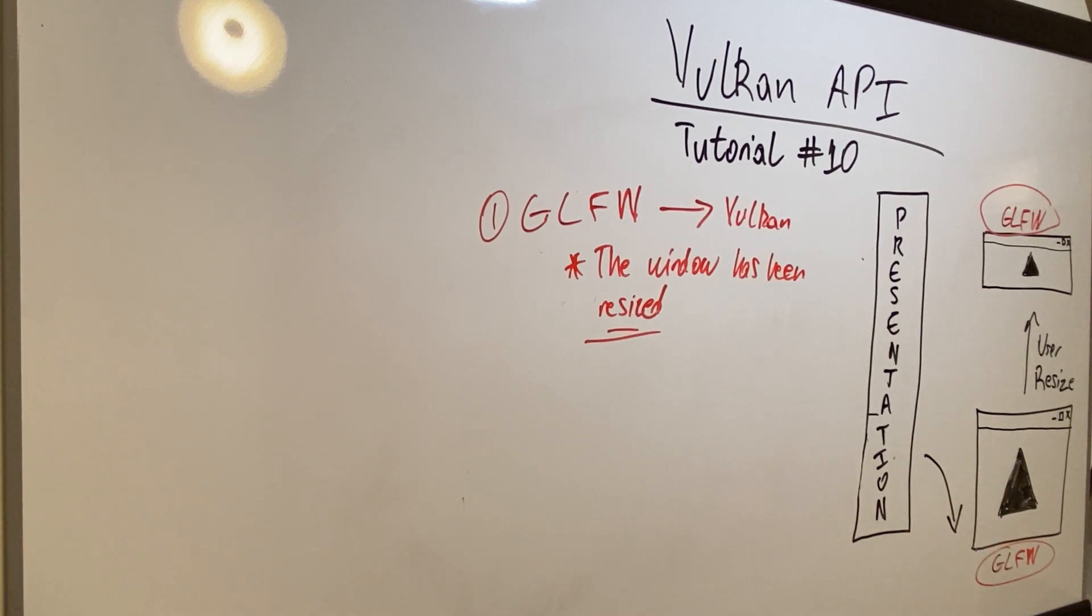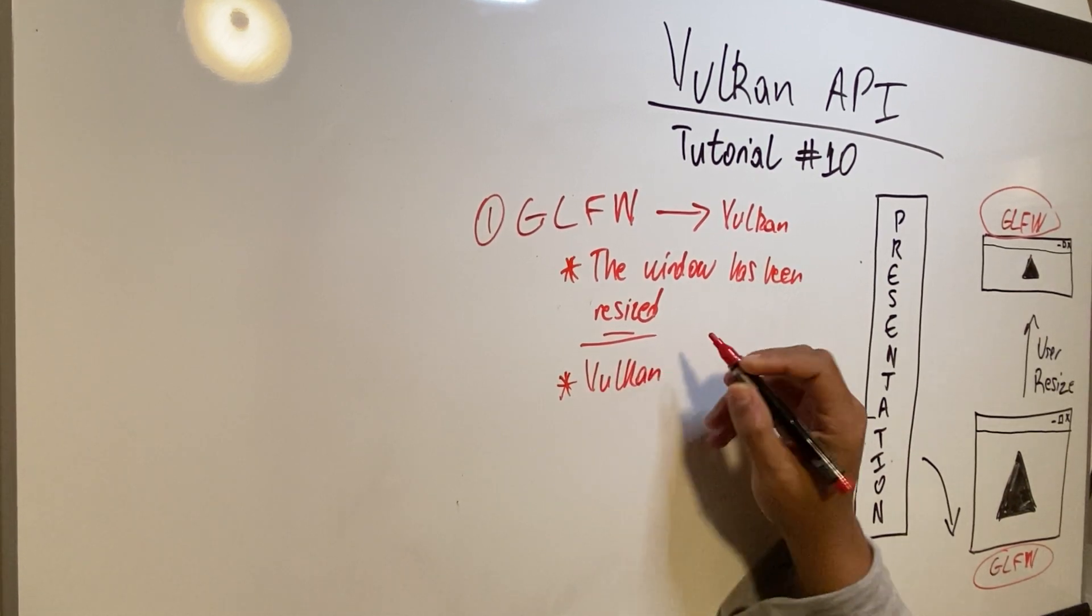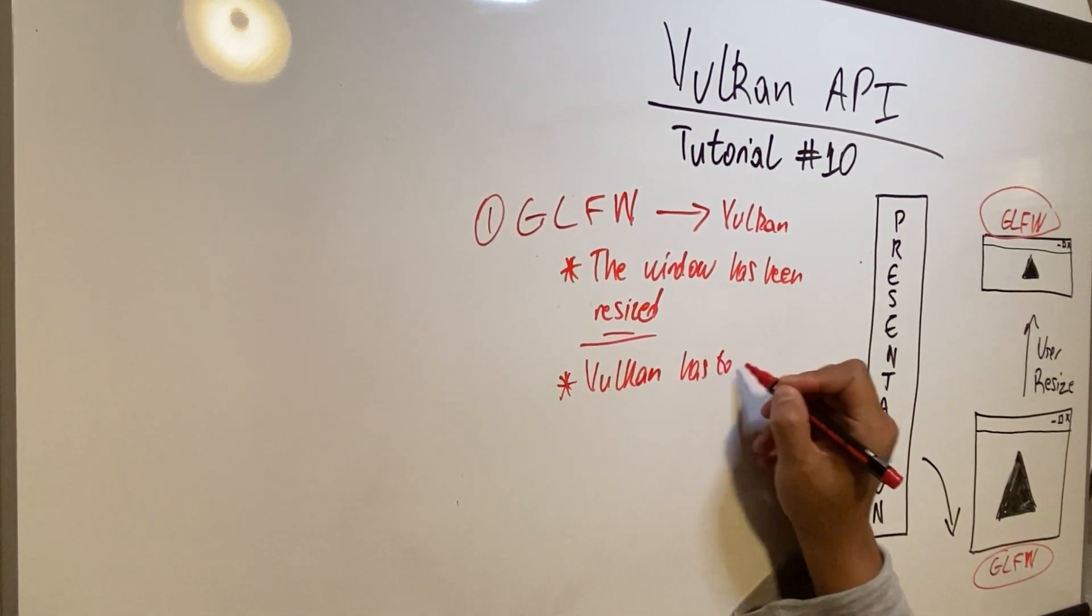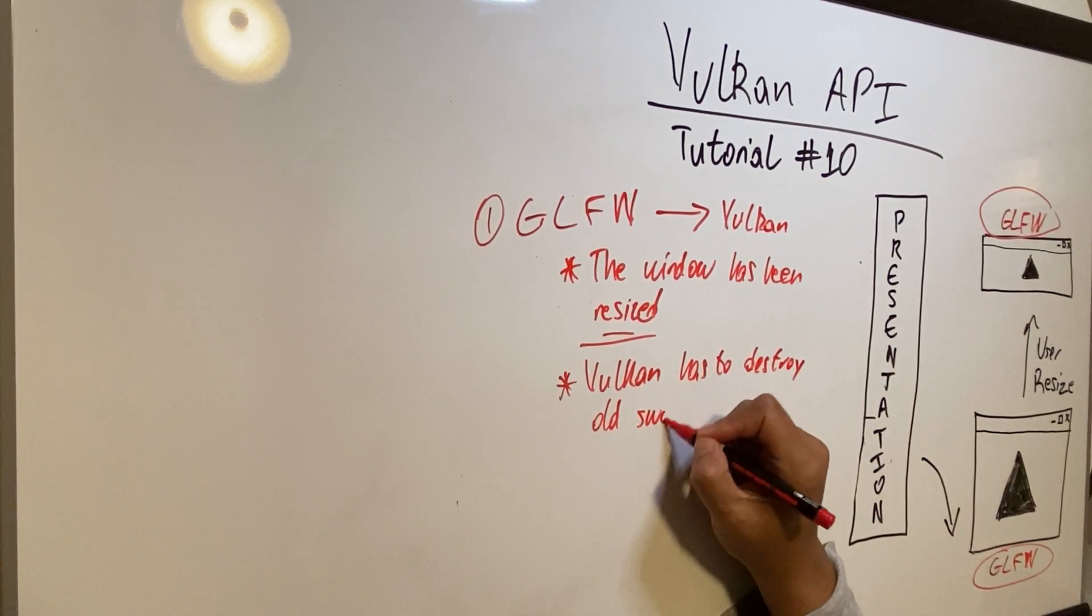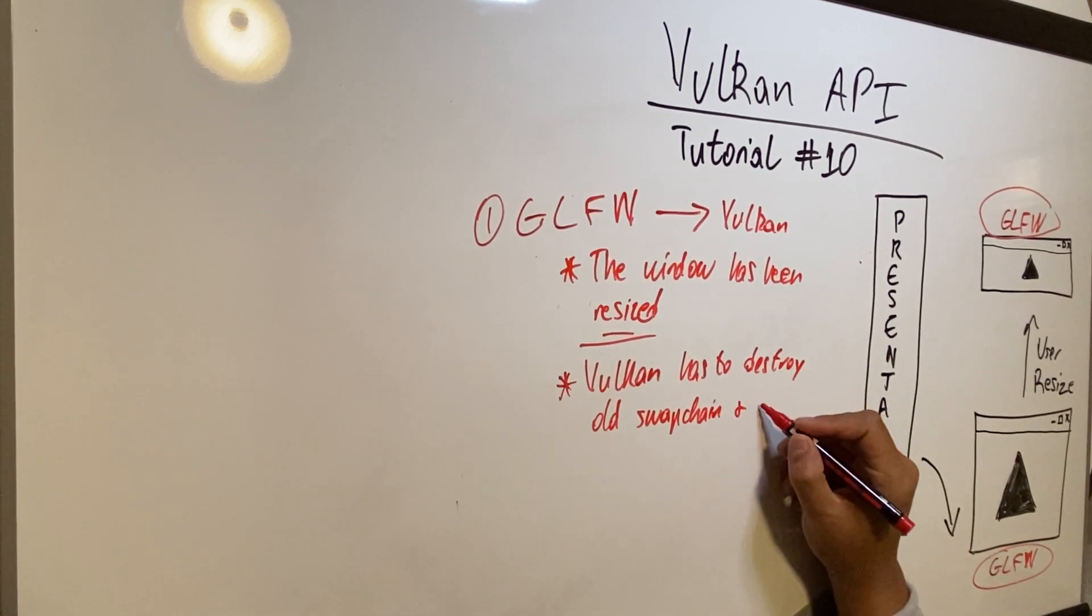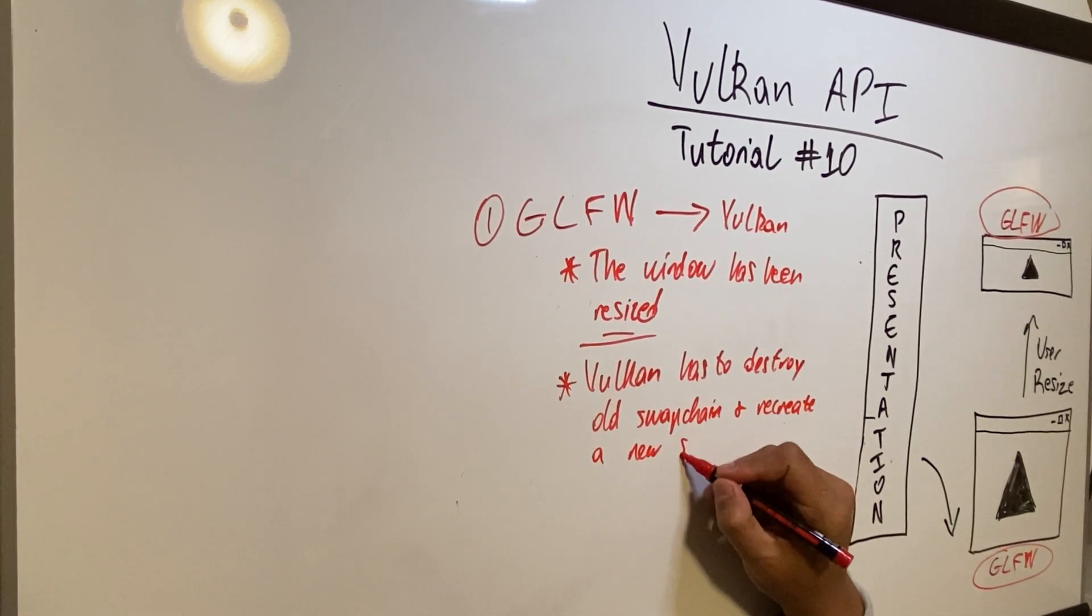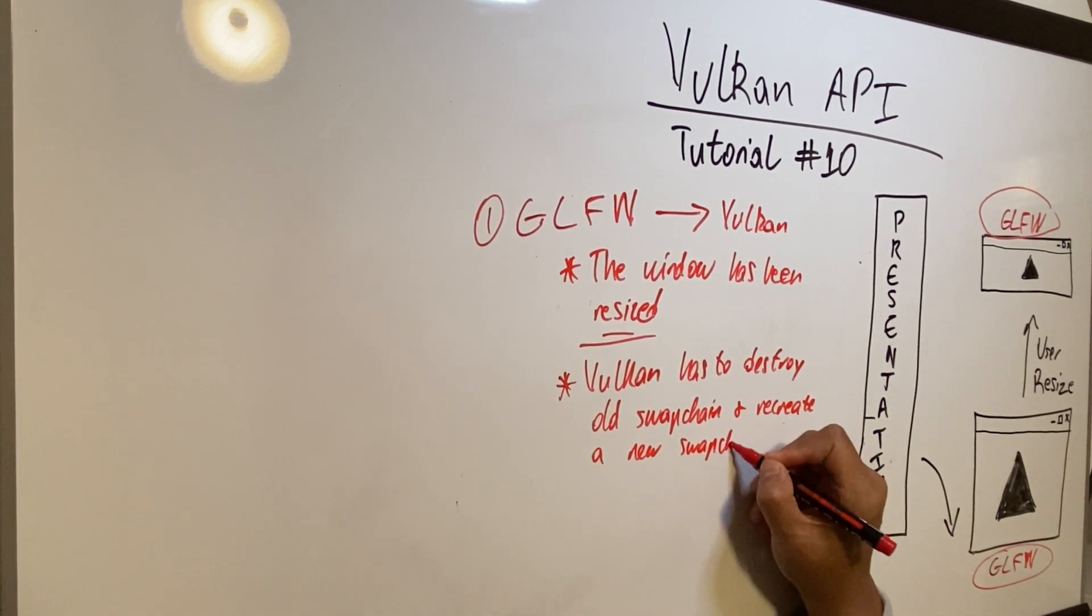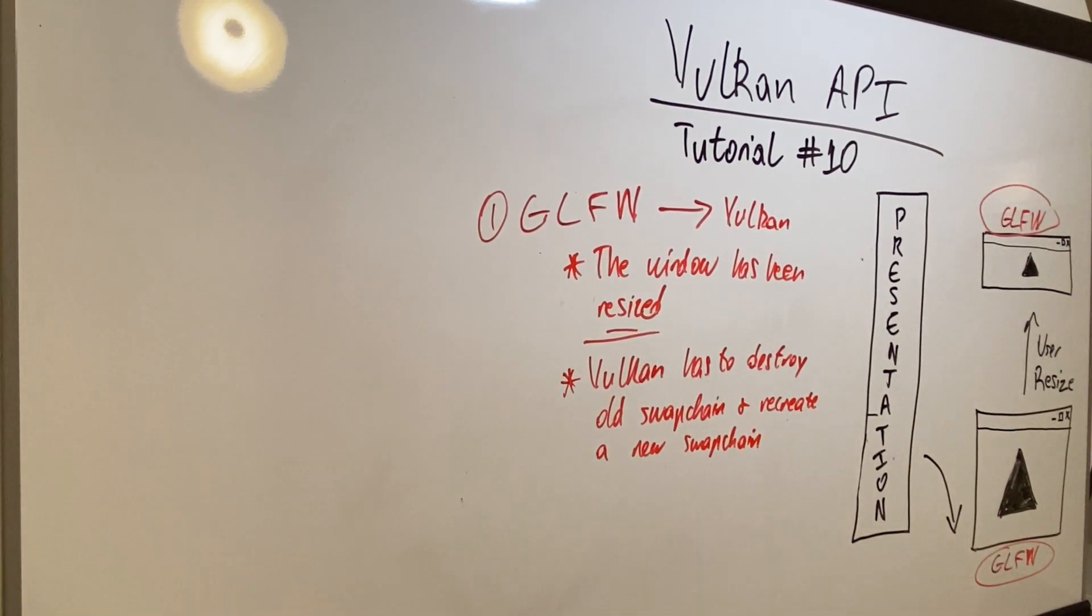Because of that, Vulkan has to destroy old swap chain and recreate a new swap chain. So that's one of the things that has to be done: you have to gracefully destroy the old swap chain and recreate the new swap chain.